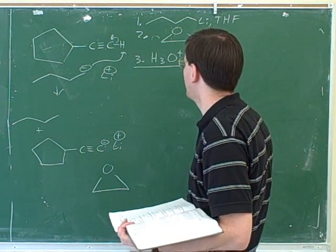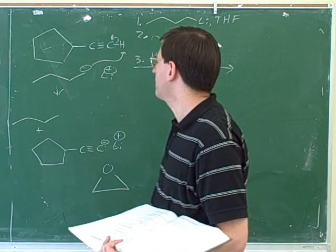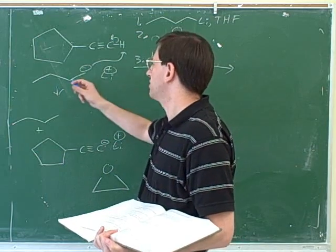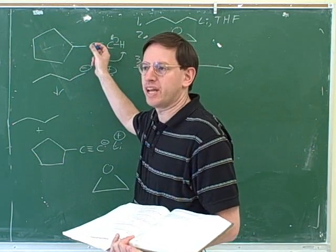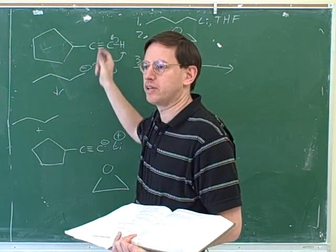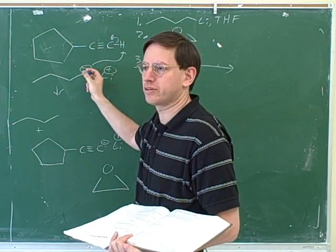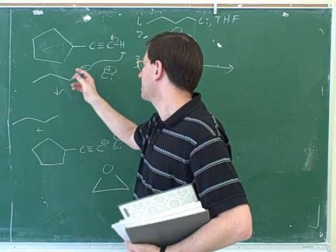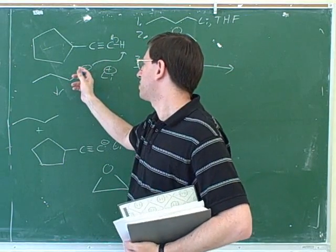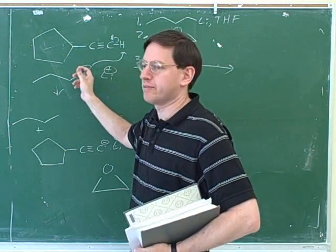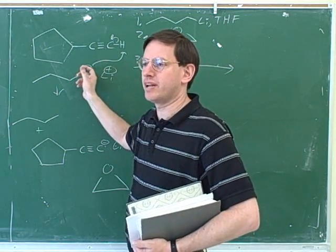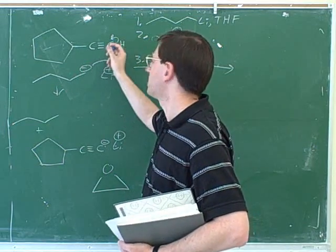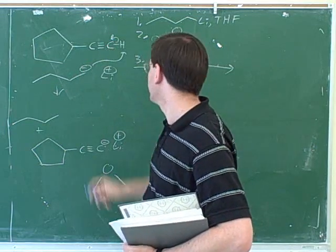Let's talk through what we've gotten to so far. This is another of the bases you can use to deprotonate alkynes — we can use Grignards or alkyllithiums. Normally you have to keep these away from protic solvents to keep them from being deprotonated. By the same token, this base could deprotonate this alkyne.